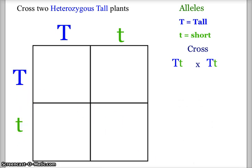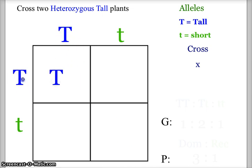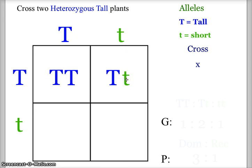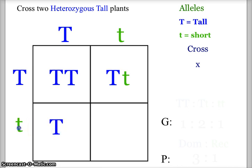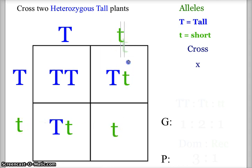Now we're ready to do the actual cross. It's just like a multiplication table — column to row. The first offspring has the probability of being homozygous tall. The second probability for an offspring is heterozygous for tall. The third probability is also heterozygous for tall, and the last possibility is homozygous recessive, which is homozygous for short.